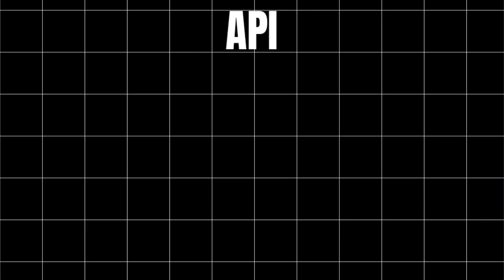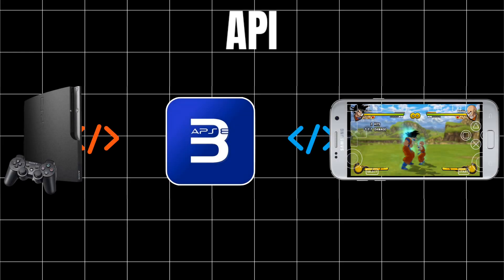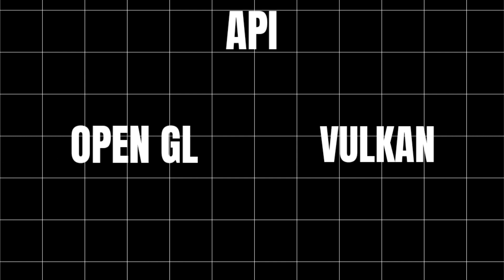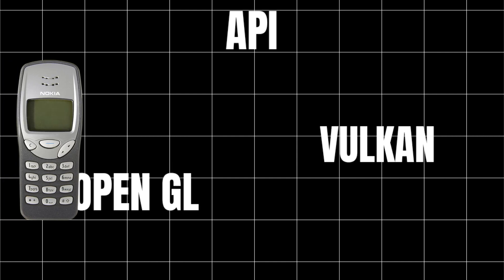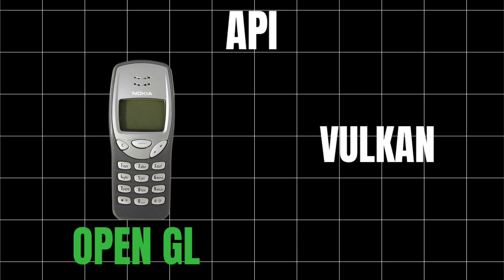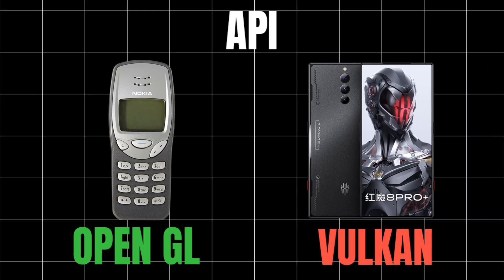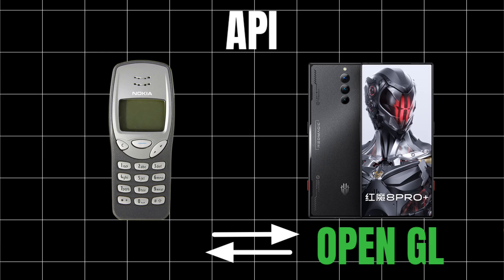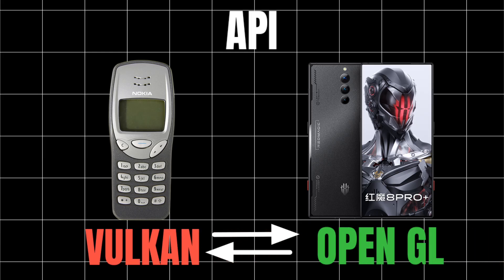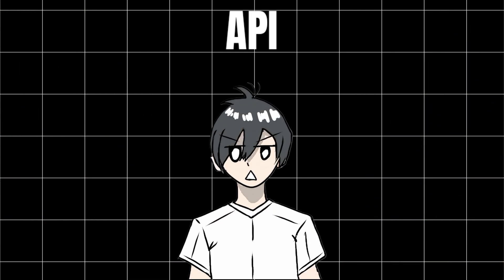The API setting determines how the emulator renders graphics, and you should switch between OpenGL and Vulkan depending on your device. Low-end and older devices should stick to OpenGL since it's more stable. Newer devices should use Vulkan for better performance. If a game isn't running properly, try switching between the two — sometimes Vulkan doesn't perform well on certain games even on high-end devices, and the same goes for OpenGL.